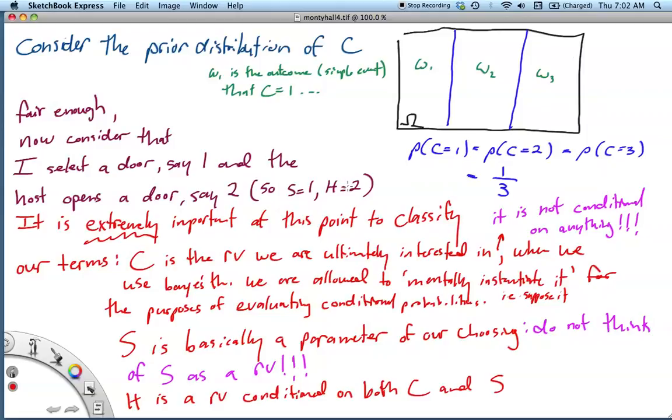So it's extremely important at this point to classify our terms. So C is the random variable we are ultimately interested in. We have to understand that it is not conditional on anything. C just is in our model. However, when we use Bayes' theorem, we are allowed to mentally instantiate it. Or like suppose that it takes on certain values for the purposes of evaluating conditional probabilities.